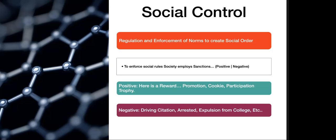Folkways or mores can tie into being considered laws, which are formalized norms. Laws make norms written down as an enforced practice. This is where we start getting to the term social control — the usage of norms to instigate control and understanding within a social construction of reality. It's the regulation and enforcement of norms to create social order. Without law, rule, and order, many people think there would be chaos.